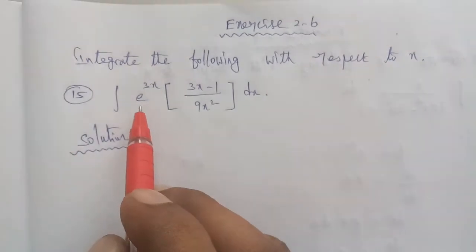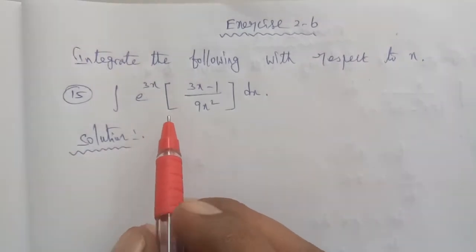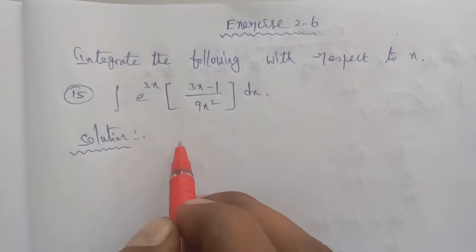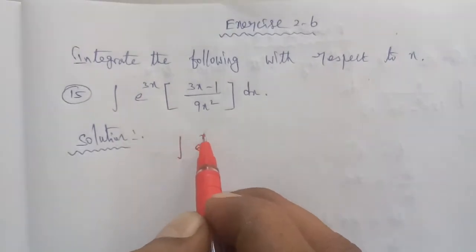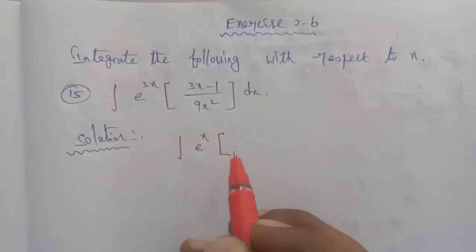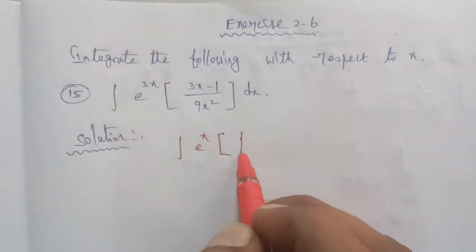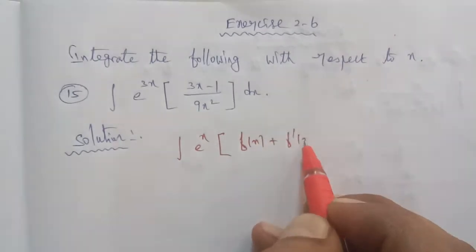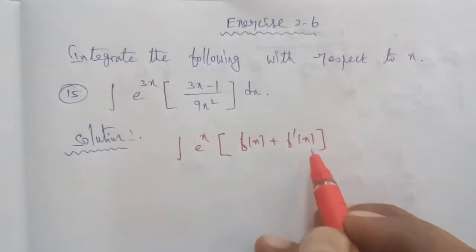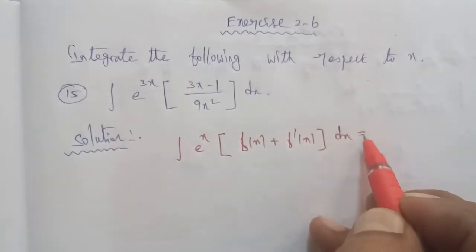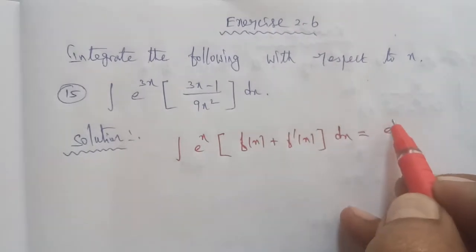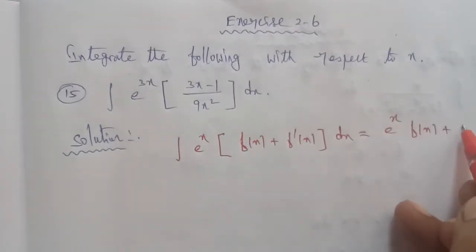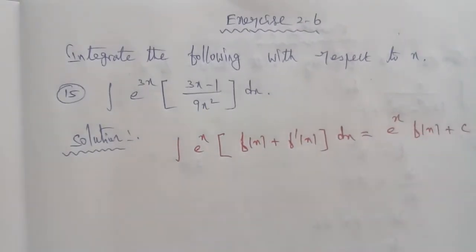So, in this sum we can directly apply one formula. The direct formula is: integral of e power x times [f of x plus f dash of x] dx is equal to e power x times f of x, plus C. That is the formula.